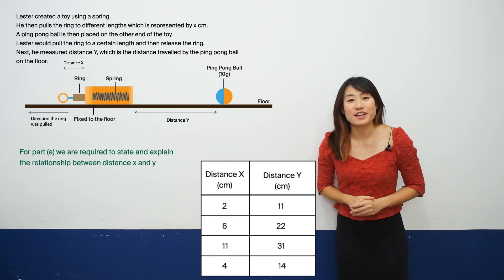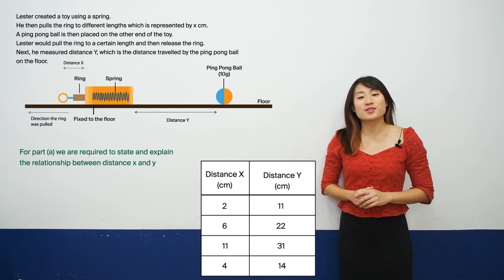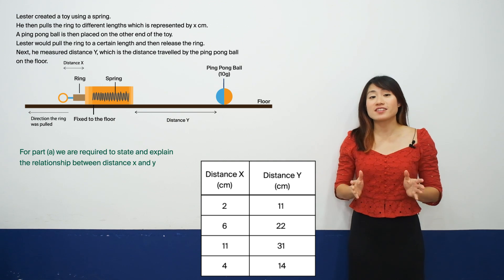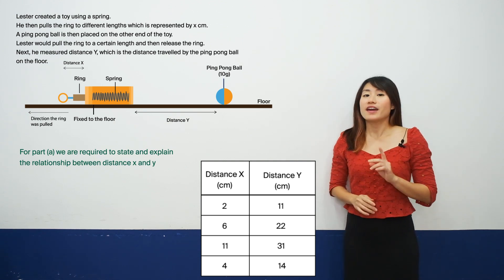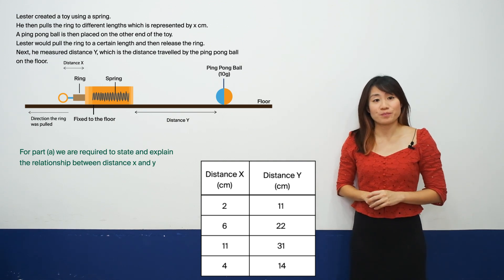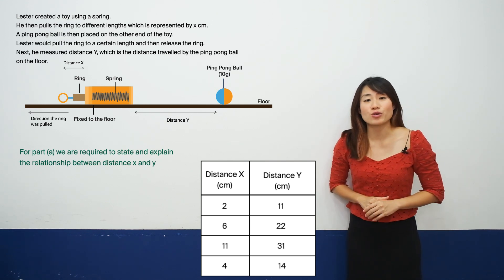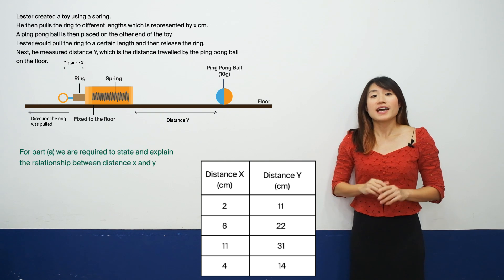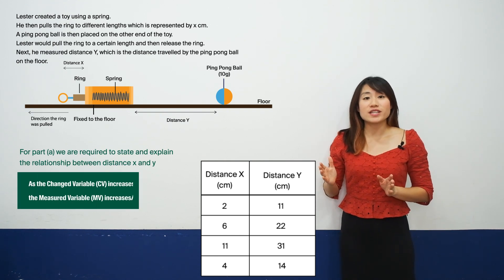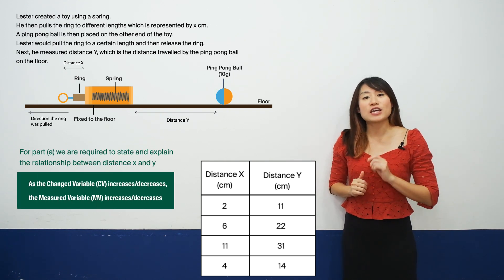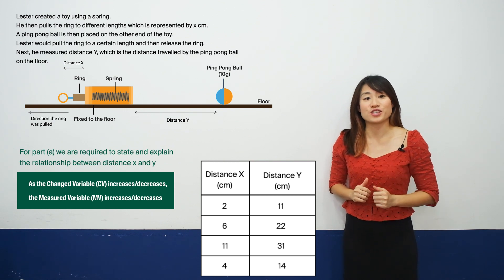Here's the question for part A. For part A, you are required to state the relationship between distance X and distance Y and then explain this relationship. The technique to answering a relationship question is very straightforward. Just remember, as the change variable increases or decreases, the measured variable increases or decreases.